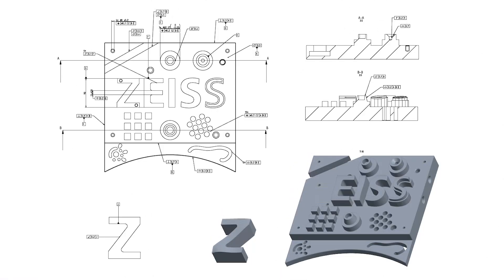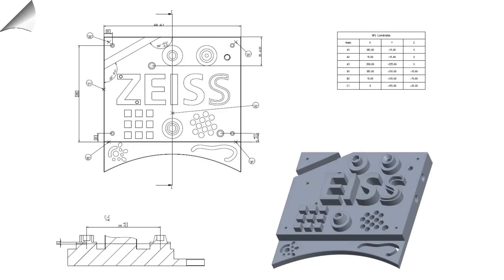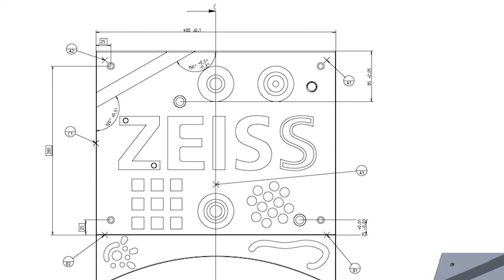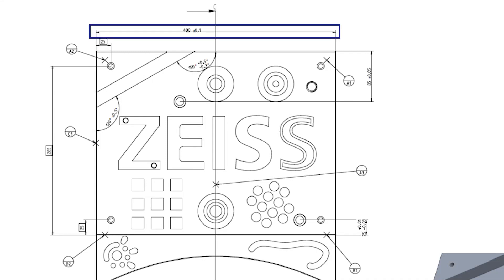To evaluate actual data, you usually have a drawing, like this one, specifying your inspection tasks. We'll check the length of the baseplate as indicated in the drawing. Here's how to do that.